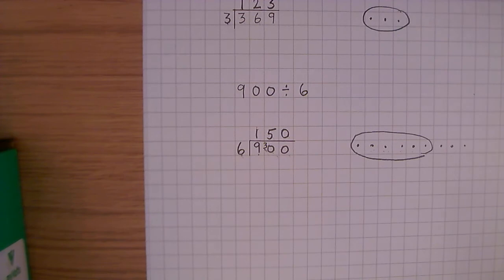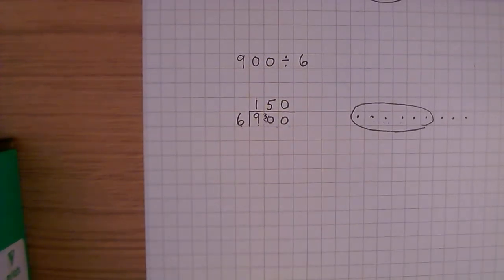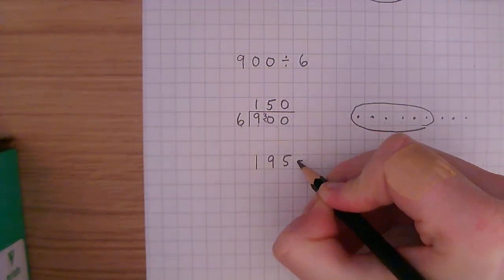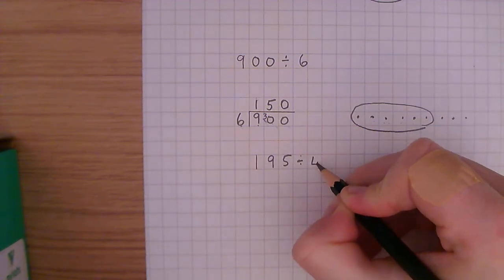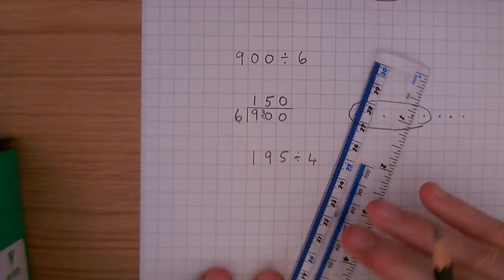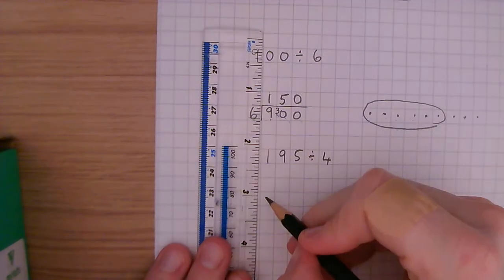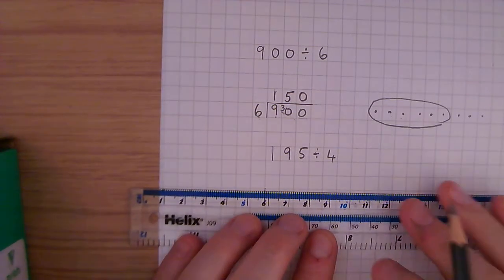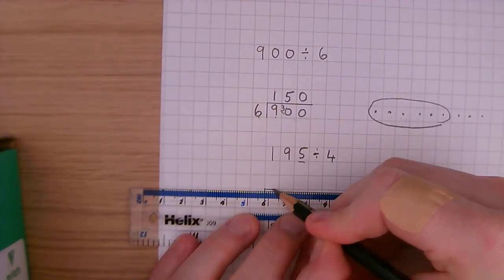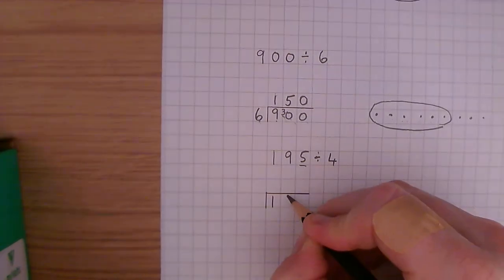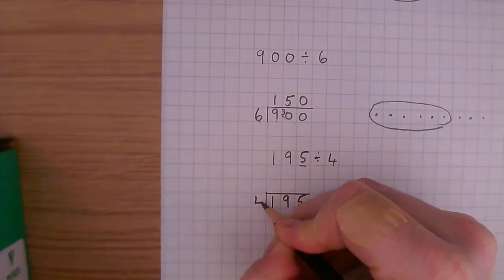I'm going to look at one more example. Now, this question is going to involve a remainder at the end as well. 195 divided by 4. I know there's going to be a remainder, because we're dividing 4 by an odd number. All multiples of 4 are even. So if we're dividing by an odd number, 195, we're going to have a remainder at the end.